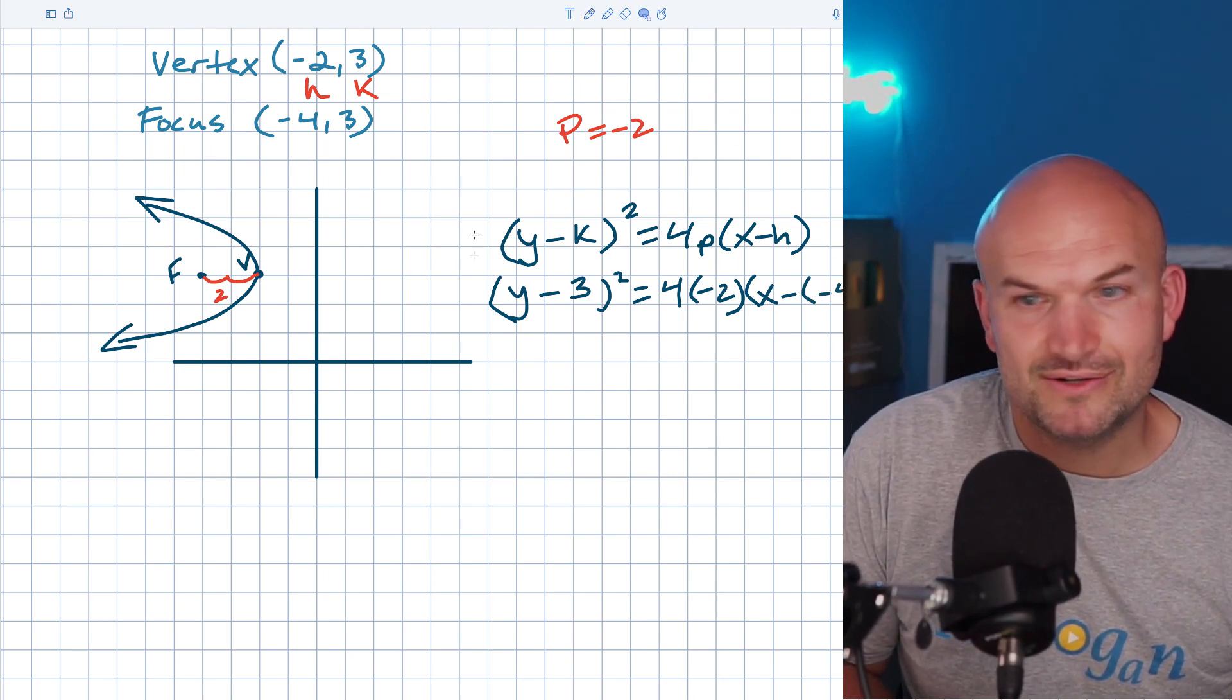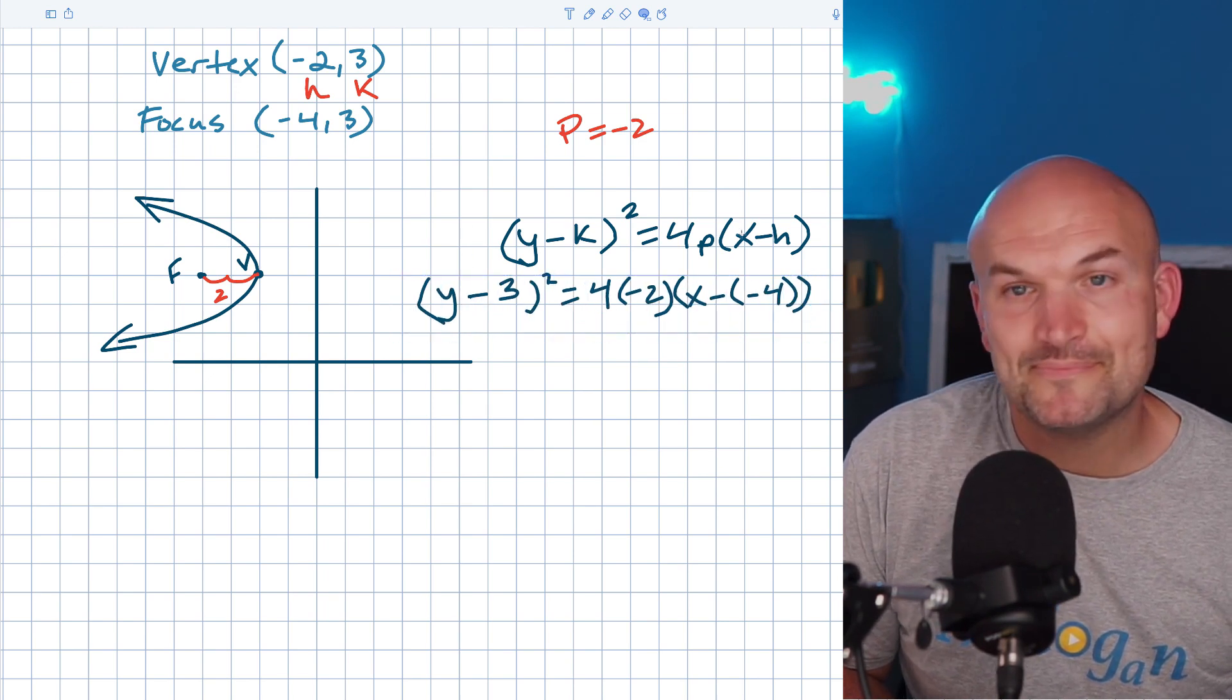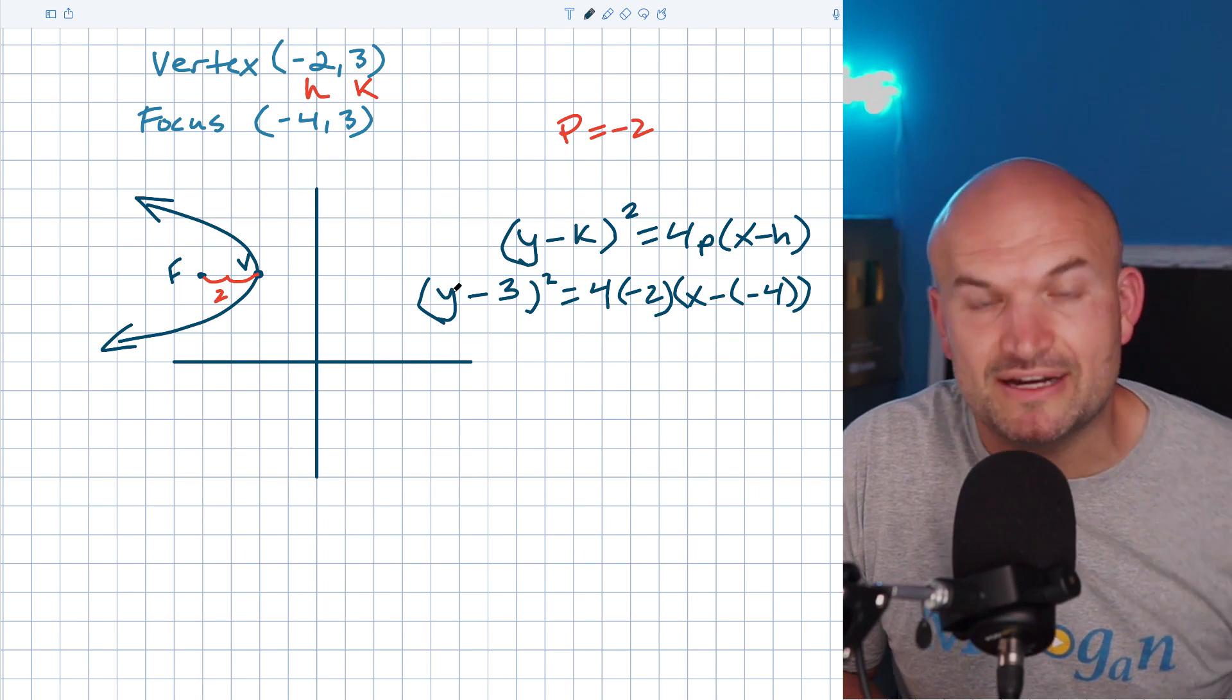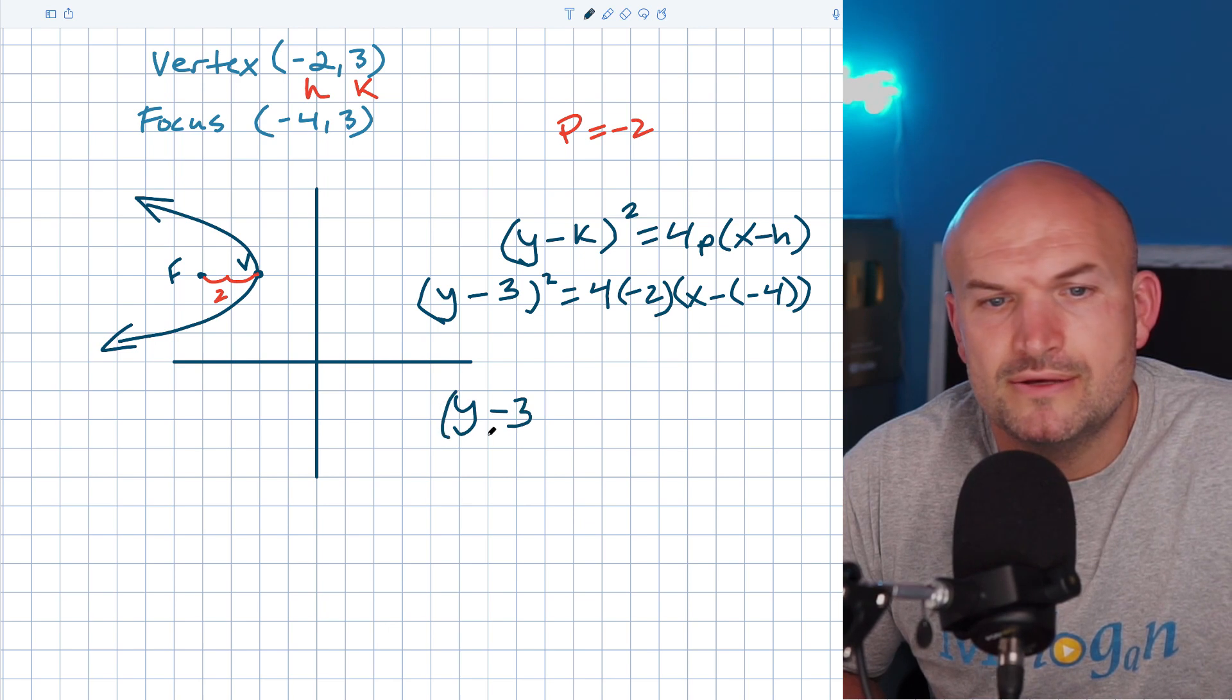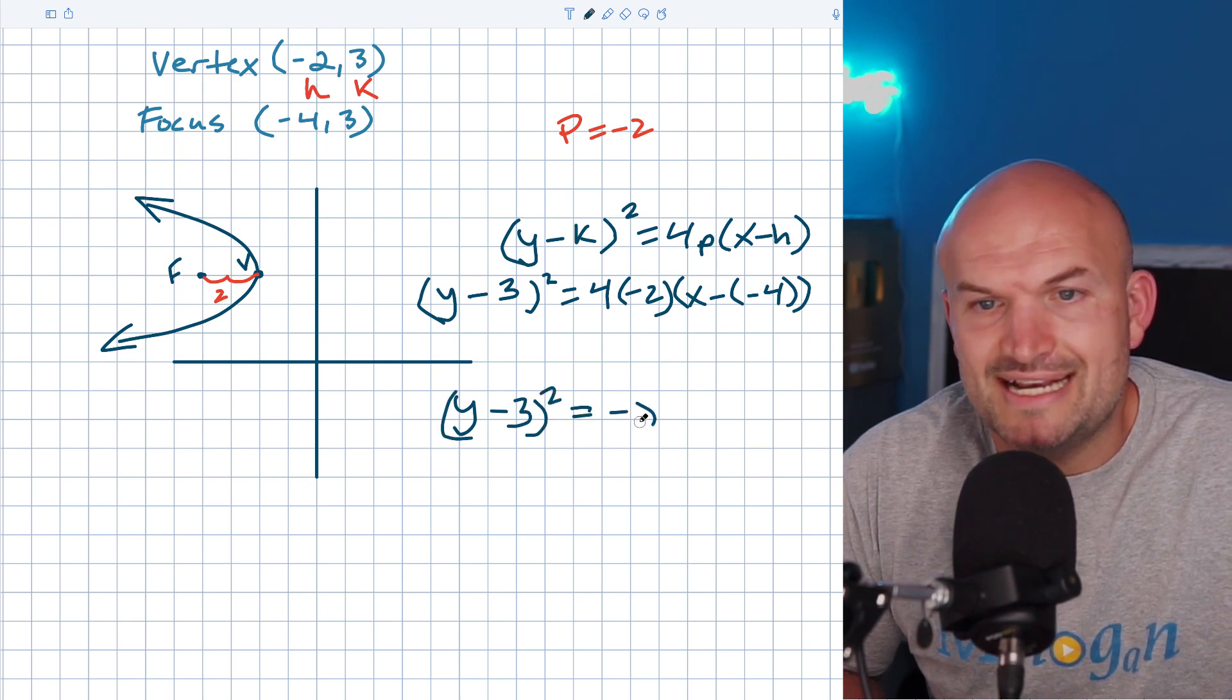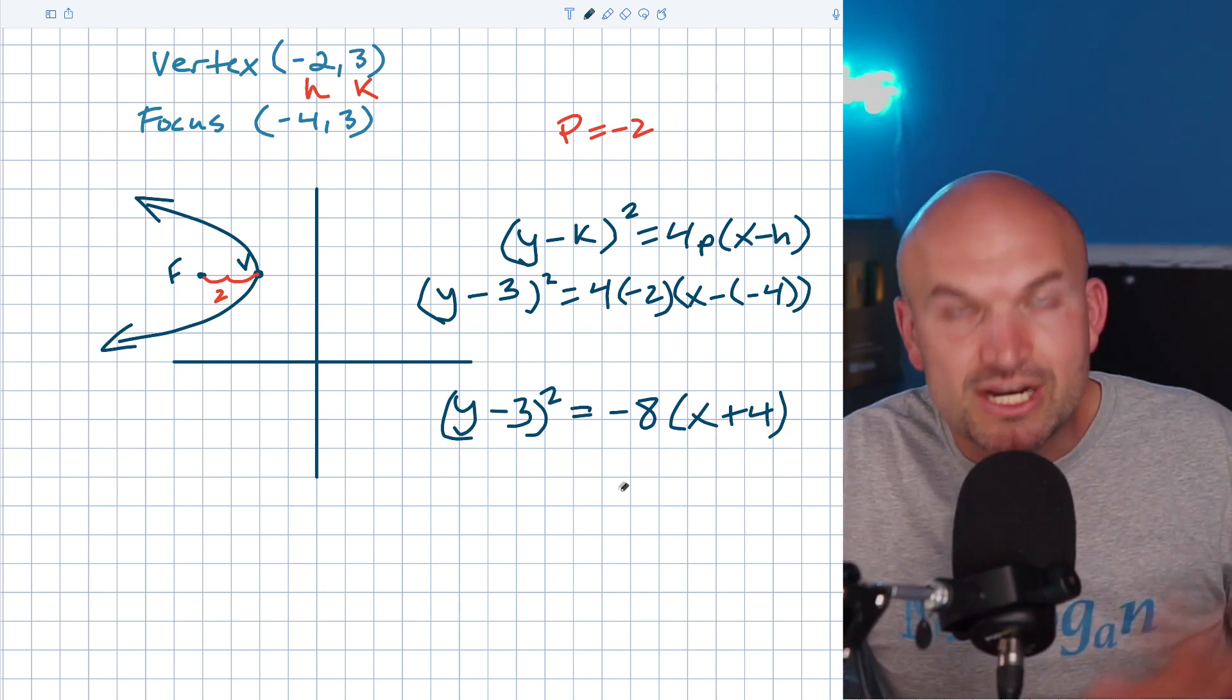I'm running out of space, so I'll go ahead and move that over just a little bit. So now let's just go ahead and simplify. Four times negative two, which is going to be negative eight. So I have (y - 3)² = -8(x + 4). And that is going to be your equation of your parabola.